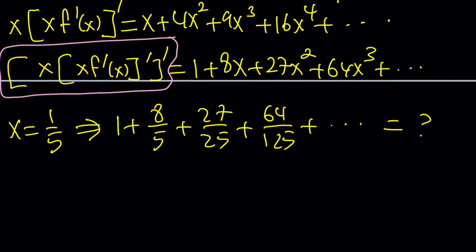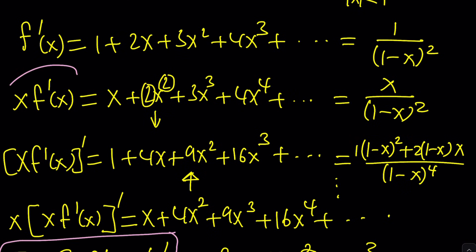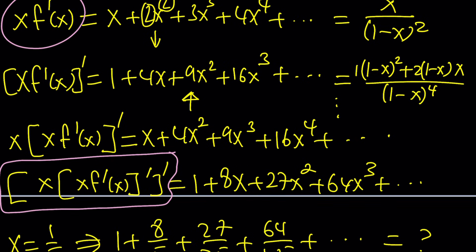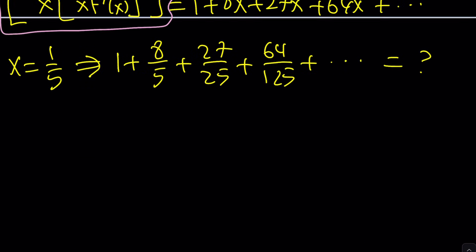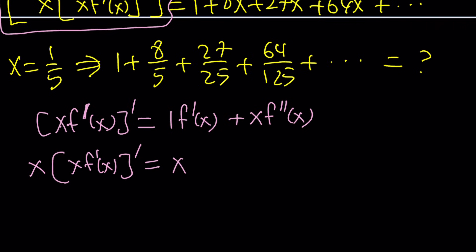Let's now systematize this. We start with x times f prime, because we already know what it is. We differentiate using the product rule: the derivative of x times f prime plus x times f double prime. Then we multiply that expression by x, giving x·f prime plus x squared·f double prime.